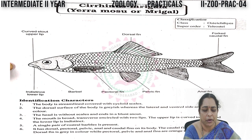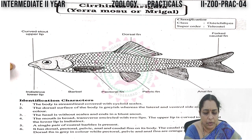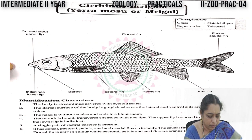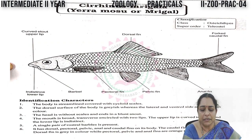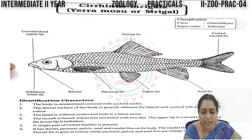Let us see the continuation of our topic. The next specimen is Cirrhinus mrigala, also commonly known as mrigal. This is also another type of fish. If you see the classification: class Osteichthyes — it has a bony endoskeleton — superclass Teleostei.